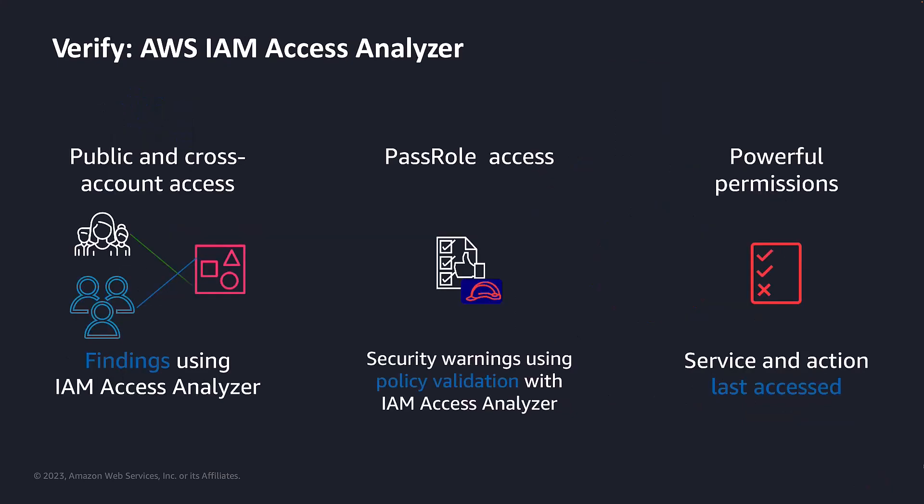IAM Access Analyzer helps you identify the resources in your organization and accounts, such as Amazon S3 buckets or IAM roles, shared with external entities. An external entity can be an AWS account or root user, IAM user or role, federated user, anonymous user, or any other entity that you can use to create conditions in the IAM policy.